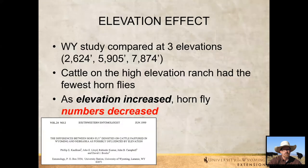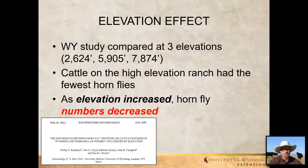There's also an effect of elevation. We used to have a livestock entomologist here at University of Wyoming named John Lloyd, who did an elevation study in Wyoming and Nebraska. He looked at cattle at three elevations — 2,600 feet, about 6,000 feet, and almost 8,000 feet. Cattle on the high-elevation ranch always had the fewest horn flies. As elevation increased, horn fly numbers decreased because those high elevations are colder environments with shorter summers and fewer fly generations. But if we're moving into a warming climate — even just a degree or two — this might change how elevation plays a role in Wyoming.